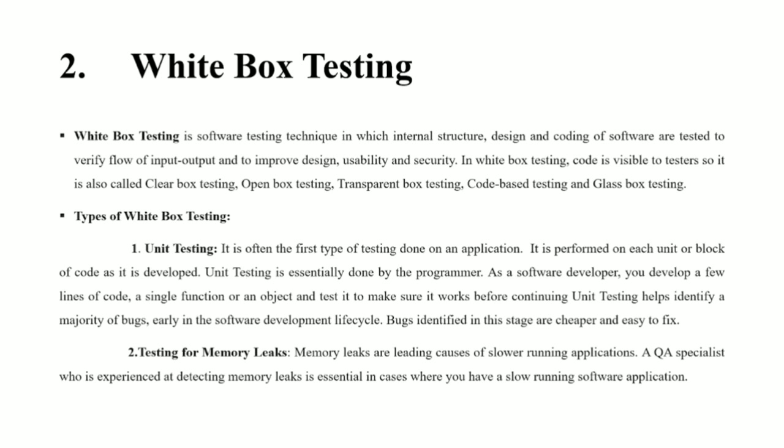There are two types of white box testing: unit testing and testing for memory leaks. Unit testing is often the first type of testing done on an application. It is performed on each unit or block of code as it is developed, and is essentially done by the programmer. As a software developer, you develop a few lines of code, a single function or an object, and test it to make sure it works before continuing. Unit testing helps identify a majority of bugs early in the software development lifecycle, and bugs identified at this stage are cheaper and easier to fix.